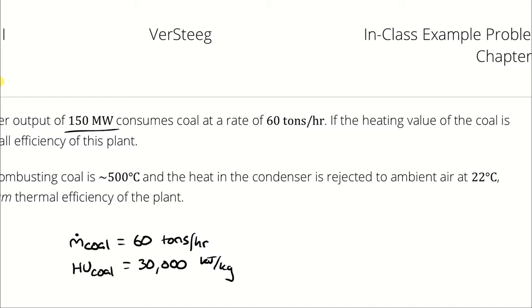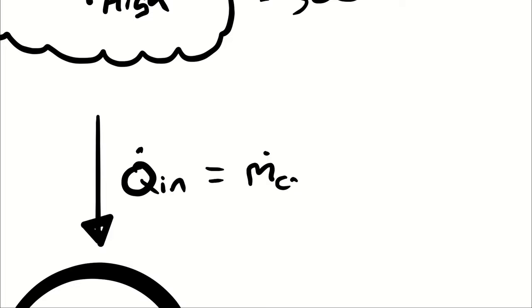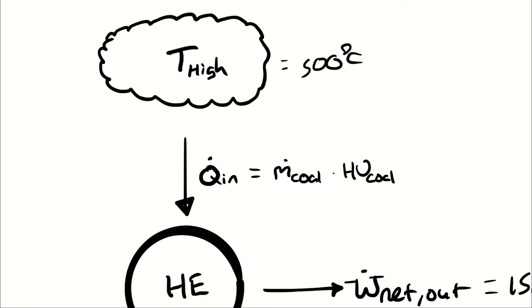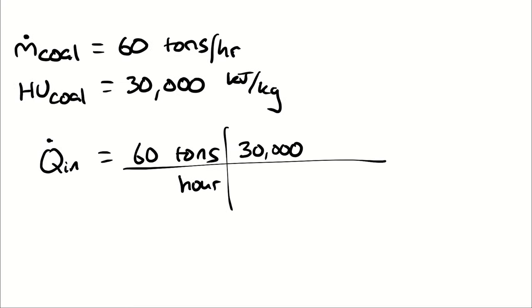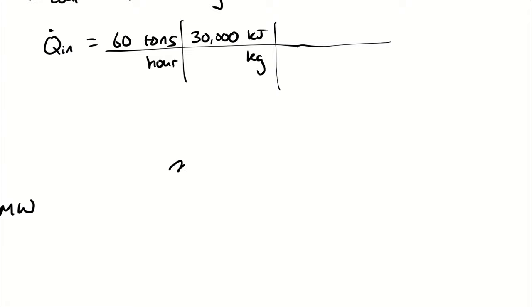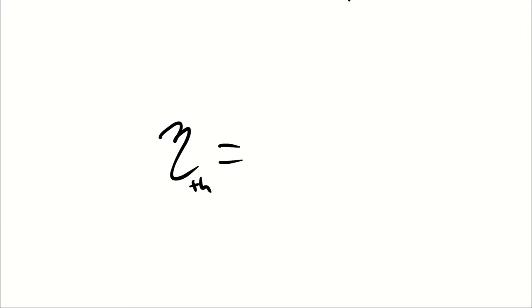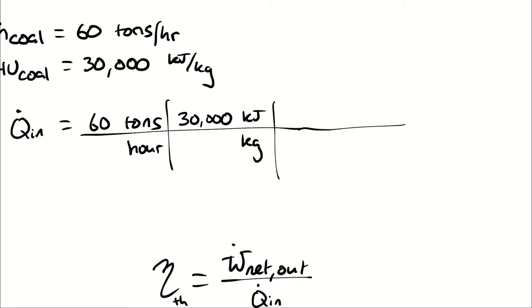We can multiply those two quantities together to come up with an expression for how much heat is emitted by the burning coal per unit time. That will give us Q_in. Once I have Q_in, I will be using that to calculate the thermal efficiency, which means I'm going to divide my network out of 150 megawatts by the number we calculate. And because I want a unitless proportion, it'll probably be easiest if I calculate Q_in in megawatts.